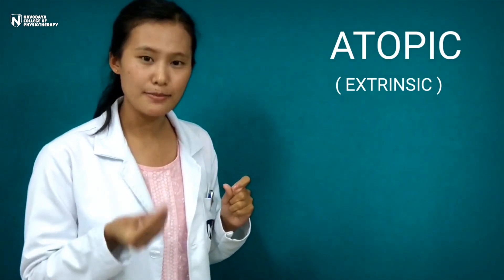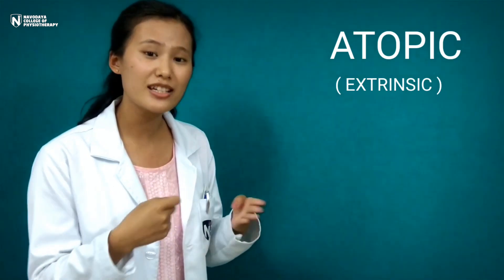Asthma can be classified based on etiology, degree of severity, and clinical types. Based on etiology it is classified into atopic (extrinsic) and non-atopic (intrinsic). In atopic asthma, the individual is genetically predisposed to produce a hyperreaction towards a normal allergen. It is called extrinsic because the patient is exposed to allergens like animal danders, pollen grains, and dust. Atopic asthma is seen in early years of life, shows association with family history, and allergy tests are often positive.